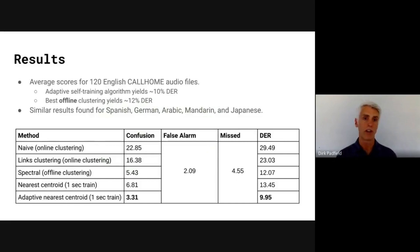We show here the results of the average scores of 120 English call home audio files that are each about 10 minutes long. We find that the adaptive self-training algorithm yields about 10% diarization error rate, which is better than the best offline clustering algorithm that yields 12% diarization error rate, which is spectral clustering. This is despite the fact that the offline clustering algorithm has access to all the points at once since it's running offline, whereas our approach is a streaming approach.